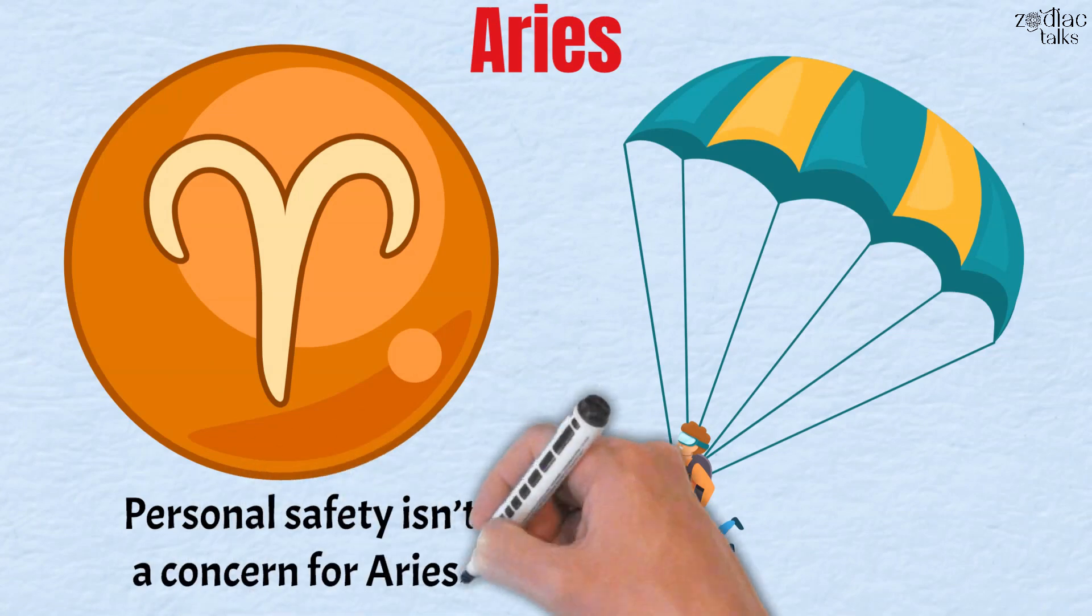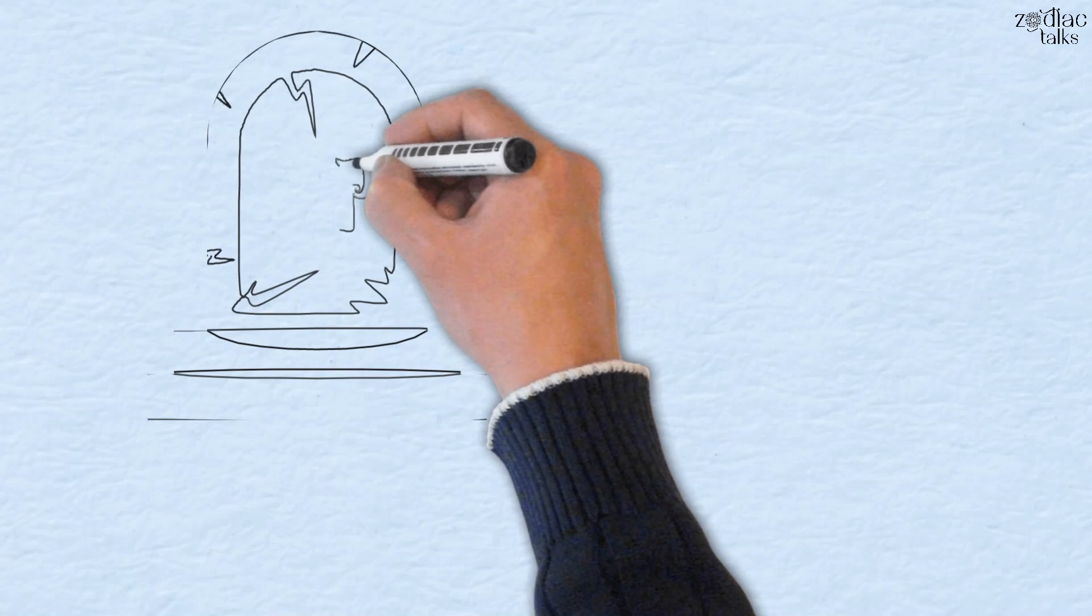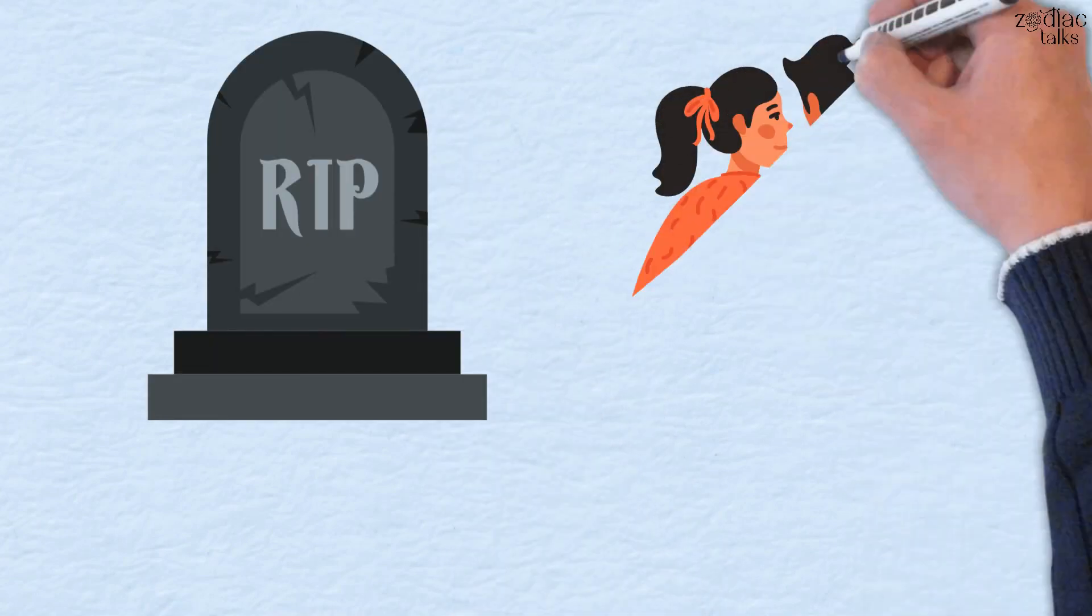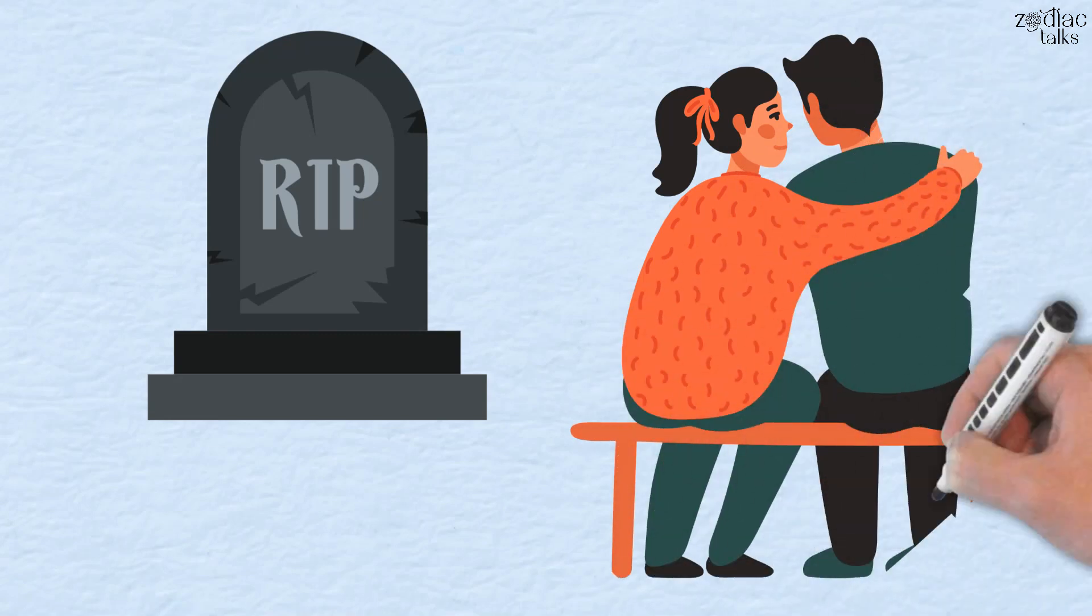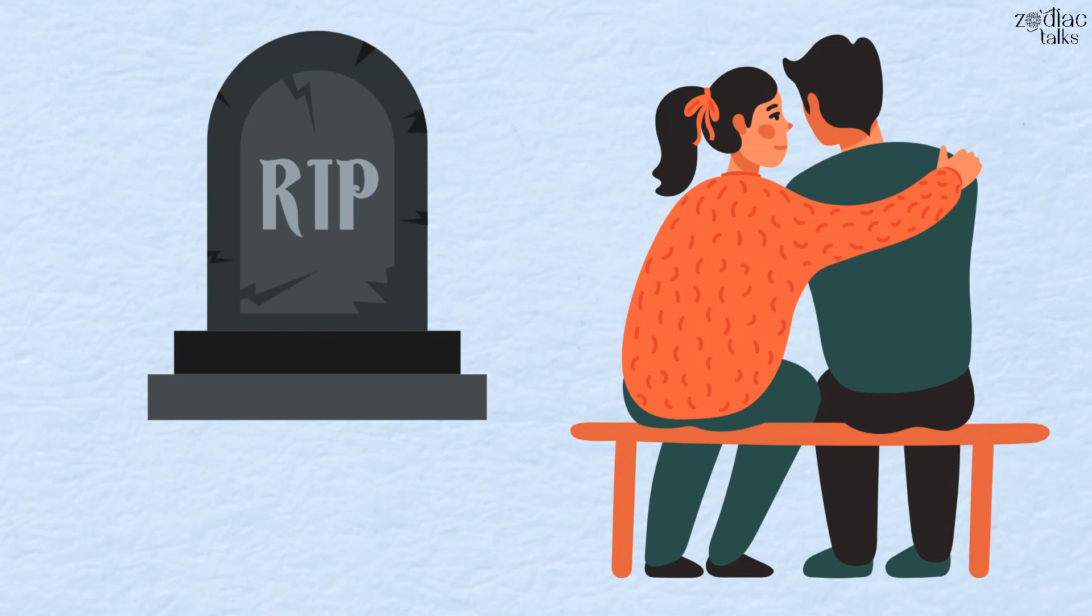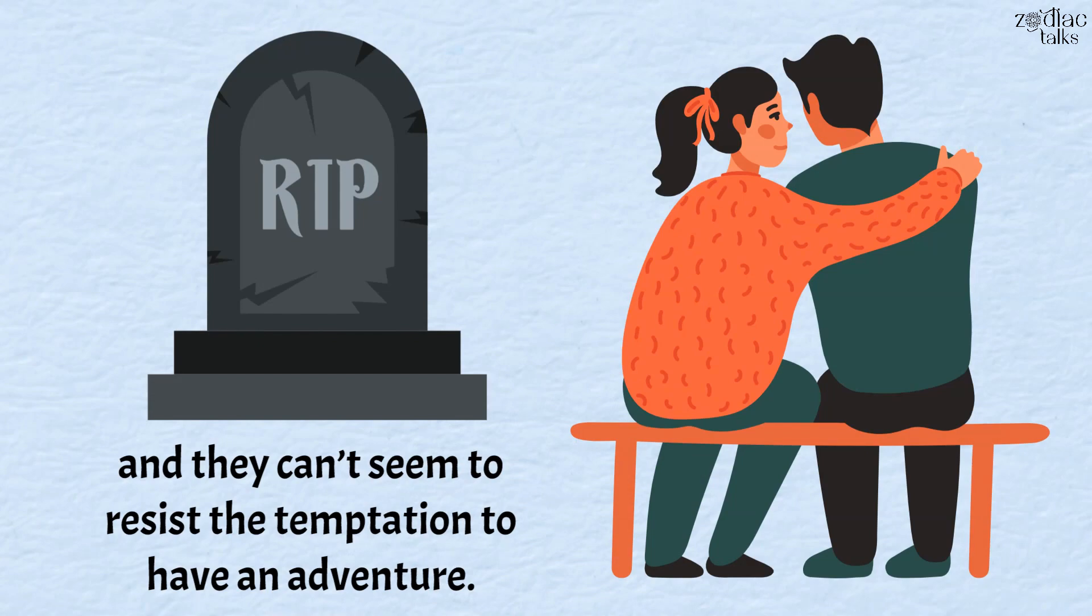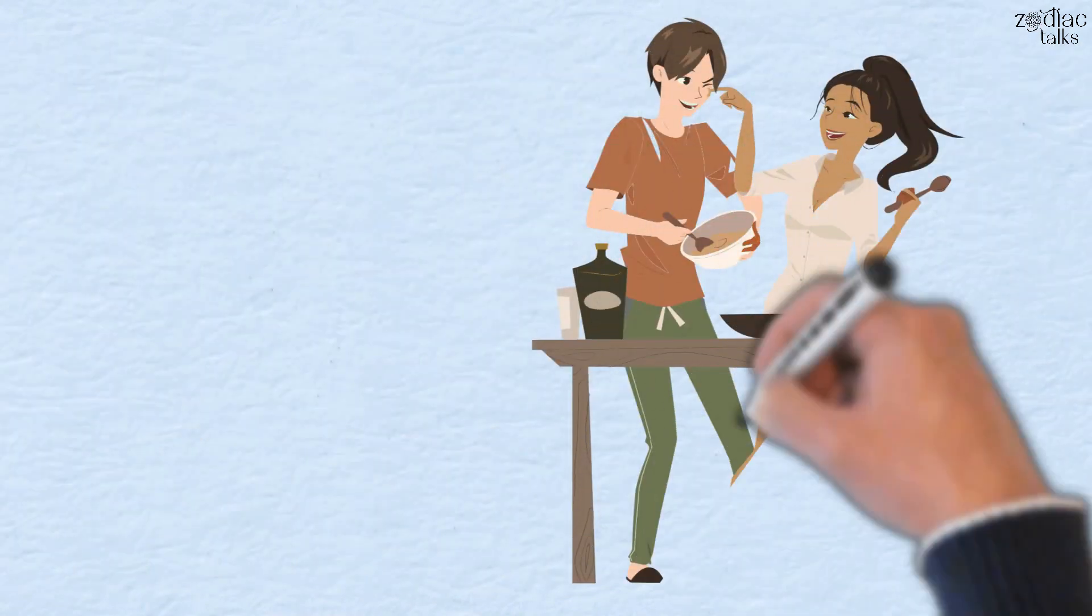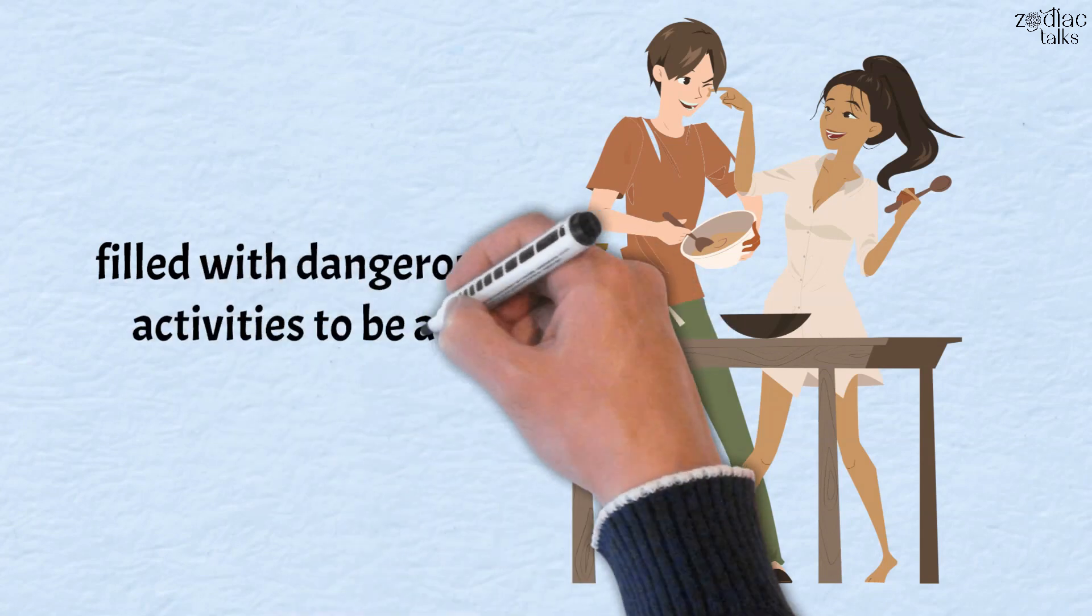Personal safety isn't a concern for Aries. If they die, at least they'll die doing something incredible, in their eyes anyway. If Aries doesn't have someone to help them set boundaries, then they're likely to spiral out of control. Their impulsivity will take them for a wild ride, and they can't seem to resist the temptation to have an adventure. Aries needs someone to physically be in their lives to intervene, to ground and anchor them, and to show them that life doesn't need to be filled with dangerous activities to be an adventure.